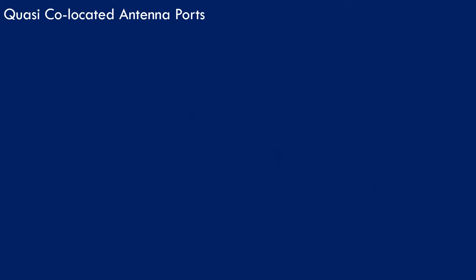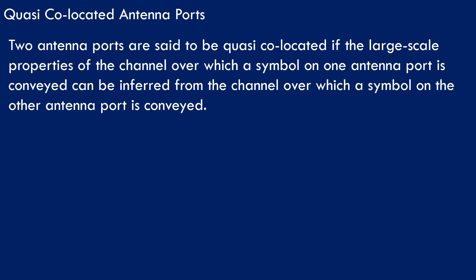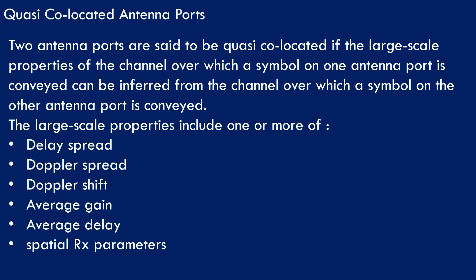Now let us briefly discuss quasi-collocated (QCL) antenna ports. As per 3GPP, two antenna ports are said to be quasi-collocated if the large-scale properties of the channel over which a symbol on one antenna port is conveyed can be inferred from the channel over which a symbol on the other antenna port is conveyed. The large-scale properties as per 3GPP are: delay spread, Doppler spread, Doppler shift, average gain, average delay, and spatial RX parameters.